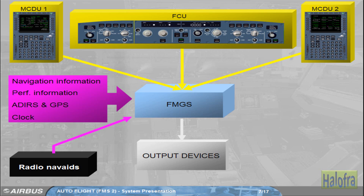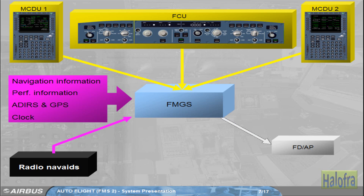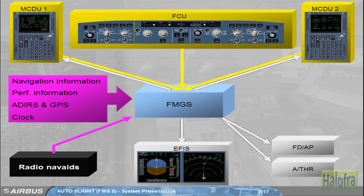The FMGS provides outputs to the flight directors, FDs, and autopilots, APs, for pitch, roll, and yaw control. The autothrust, ATHR, for thrust control. The MCDUs and EFIS for the display of information. And the navigation radios for the automatic tuning of radio aids.